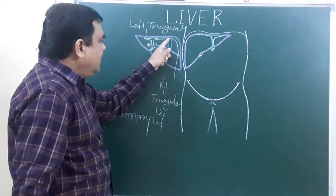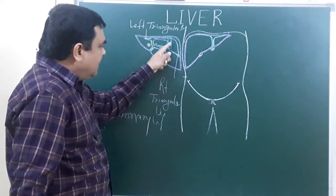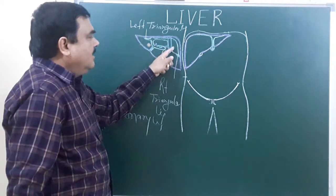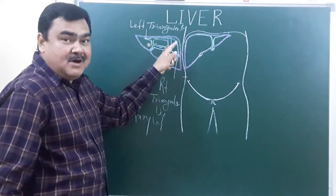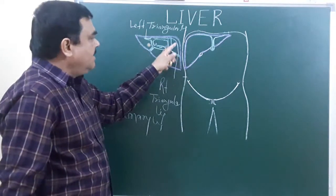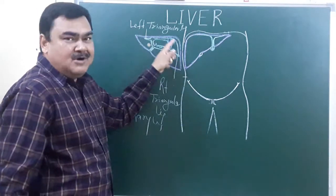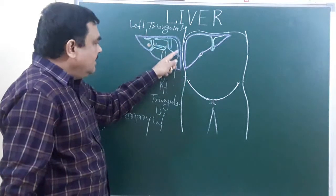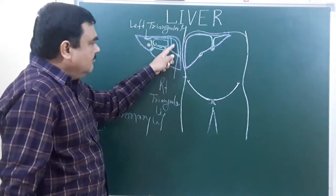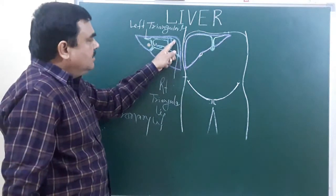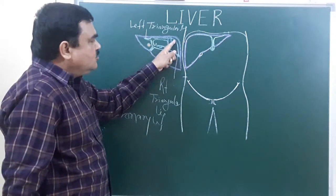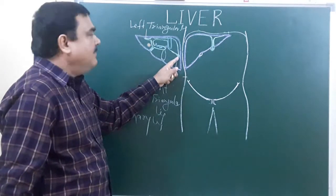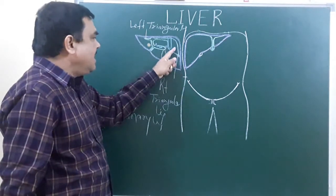Here on the posterior surface is the bare area. Bare area means uncovered area — the area which is not covered by peritoneum. This area lies between the superior and inferior coronary ligament and the right triangular ligament, and this area is bare.